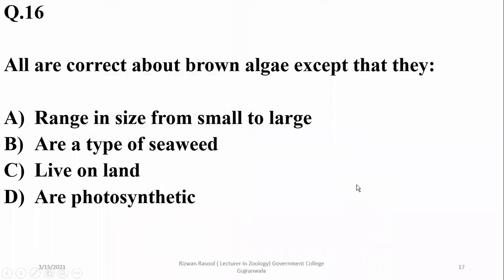All of the following are correct about brown algae except that they live on land — because they are totally aquatic. Otherwise, they may range in size, are a type of seaweed, and are photosynthetic.